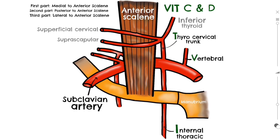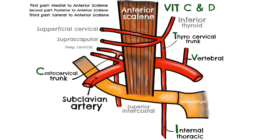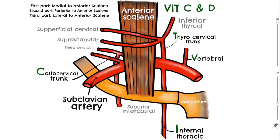We've covered the first three of five branches and the last two are easier to remember. The C in Vitamin C and D refers to the costocervical trunk, which emerges from the second part of the subclavian right behind the anterior scalene muscle. Being a trunk, it's short and has its own branches. The 'costo' part refers to the superior intercostal artery, which travels inferiorly and splits into the first two posterior intercostal arteries supplying the first two intercostal spaces. The 'cervical' part refers to the deep cervical artery, which gives spinal branches to supply the spinal cord and muscular branches to supply the deep muscles of the neck and upper back.